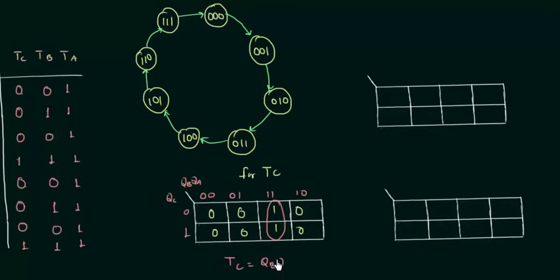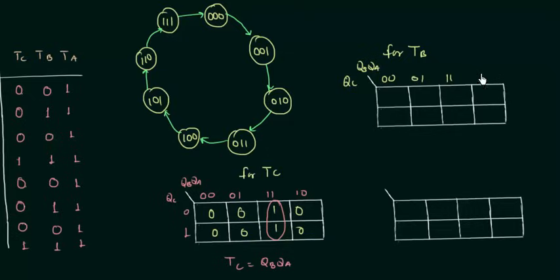Now we solve for TB. The inputs are QC, QB, QA and the TB values are 0, 1, 0, 1, 0, 1, 0, 1 — alternating pattern, which simplifies to TB = QA.